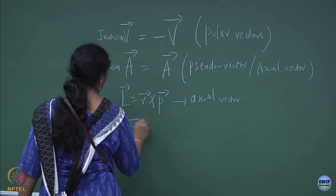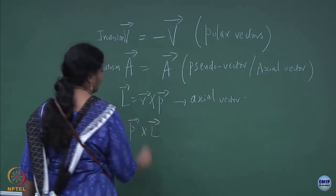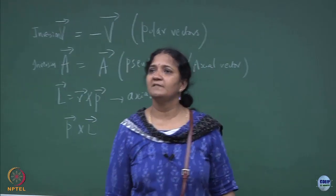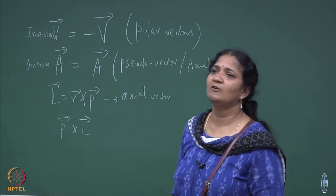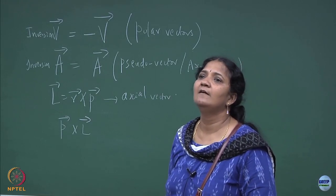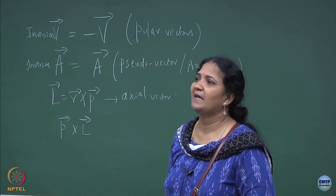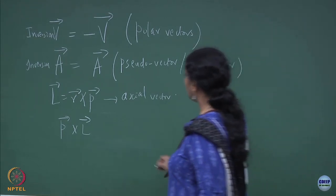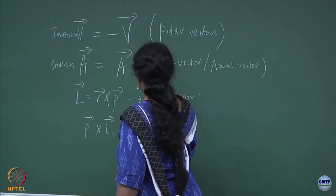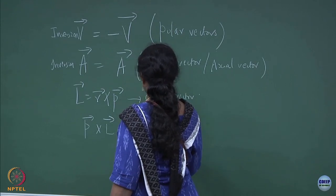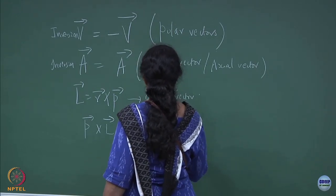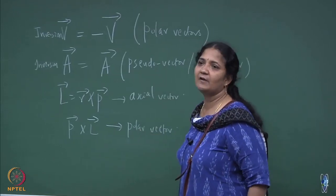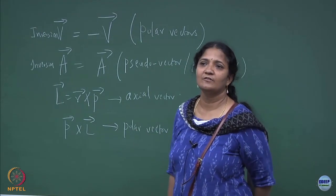What about p cross L? Here p is the momentum and L is the angular momentum. p cross L behaves like a polar vector, not an axial vector. This is a usual conventional cross product in three dimensions.